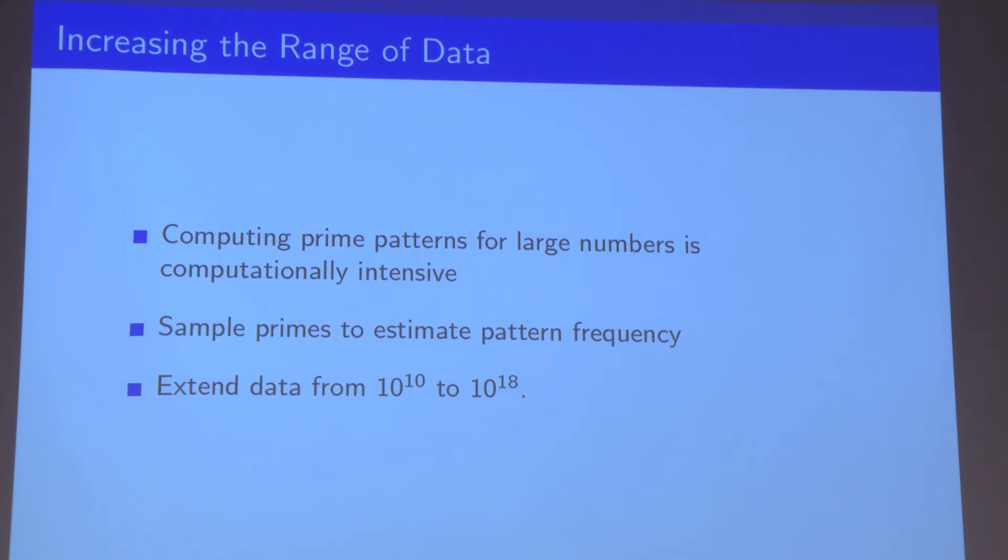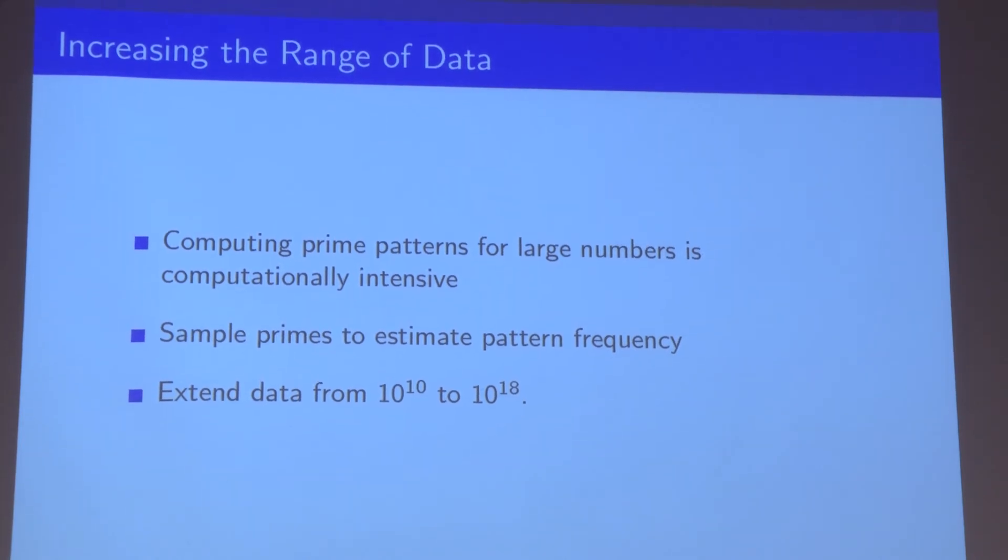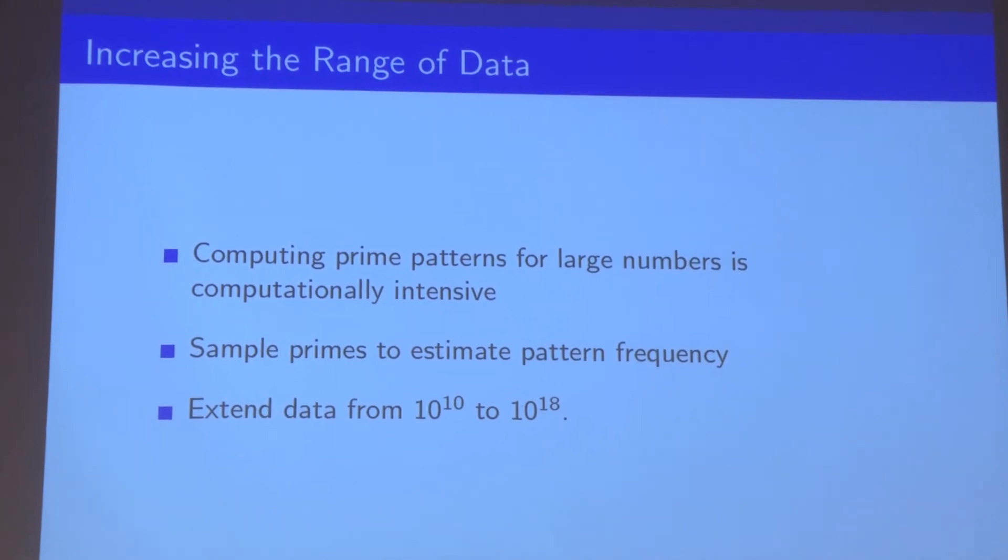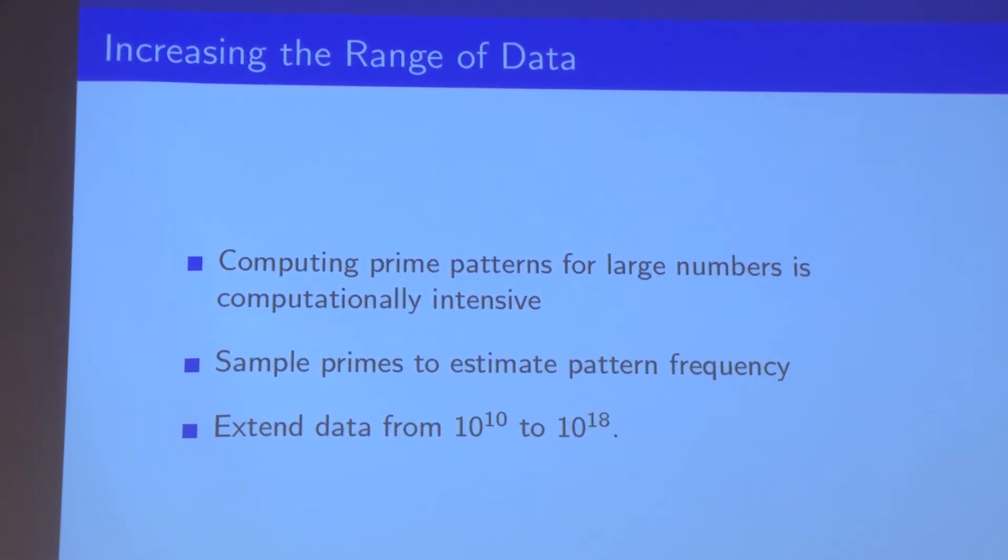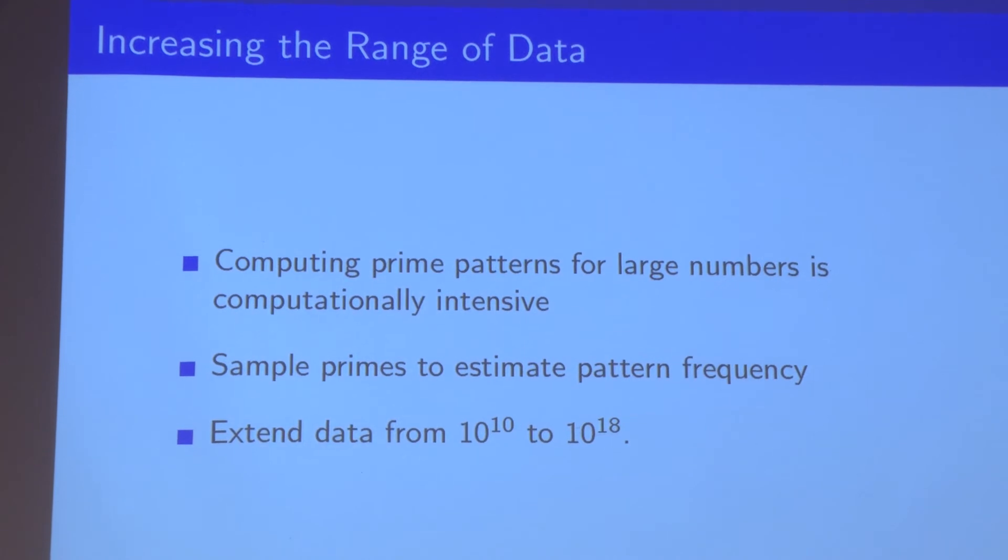When we're talking about conjectures in number theory, there are usually two main parts. The first, which we've already done, is justifying our conjecture in terms of things that we think are true but might not have necessarily proved are true. And that's basically what we've just done.